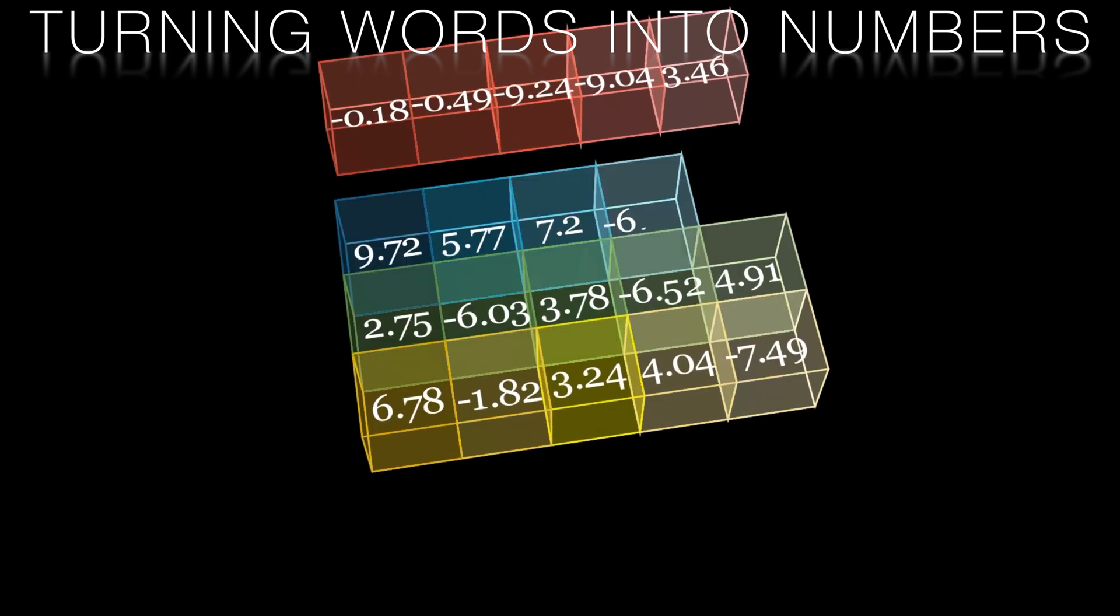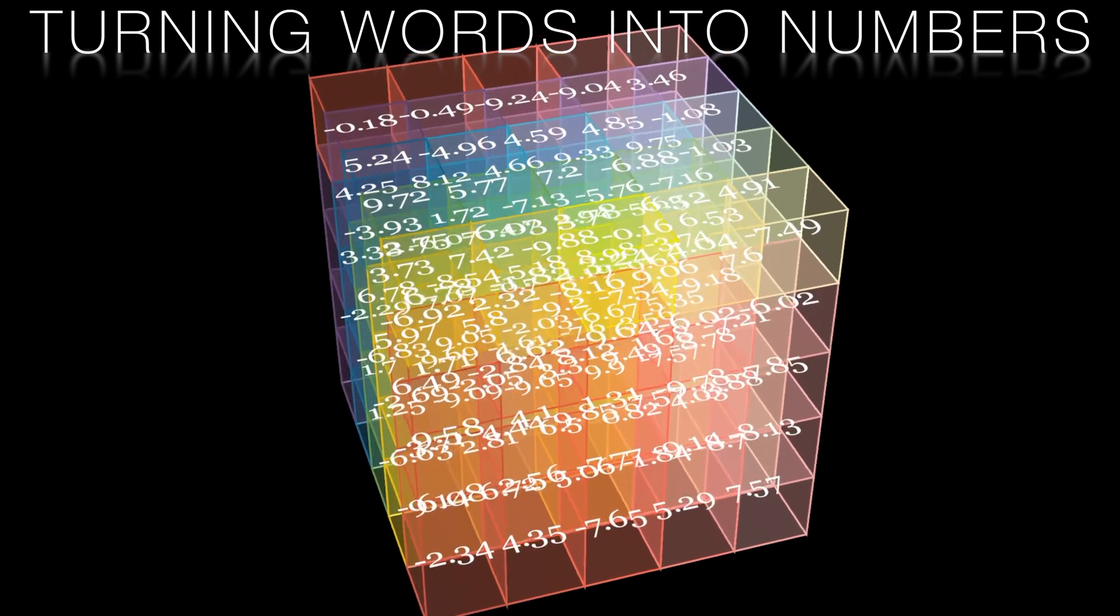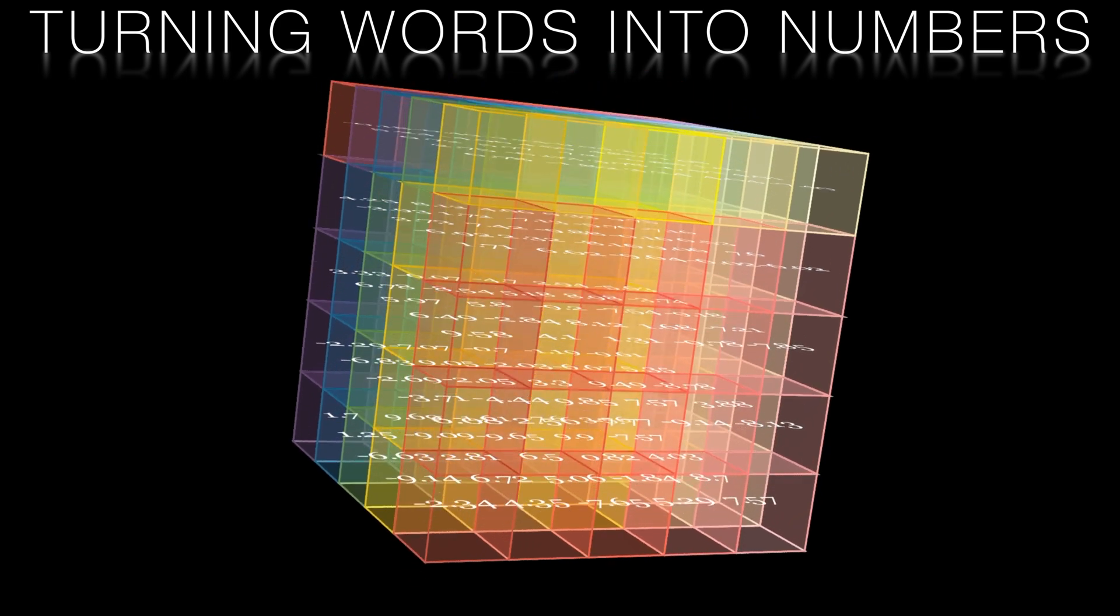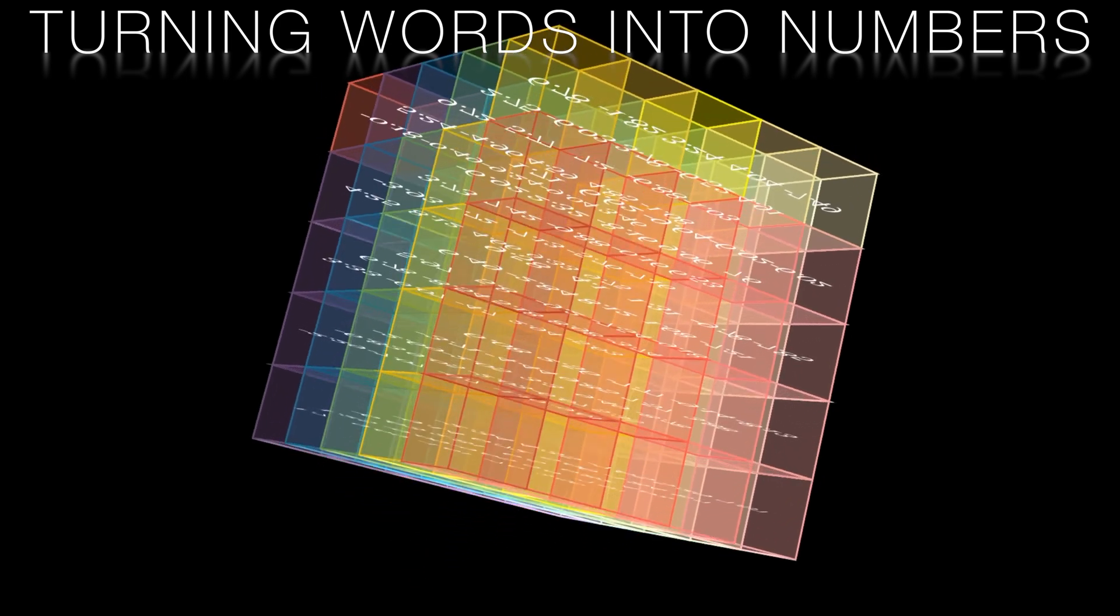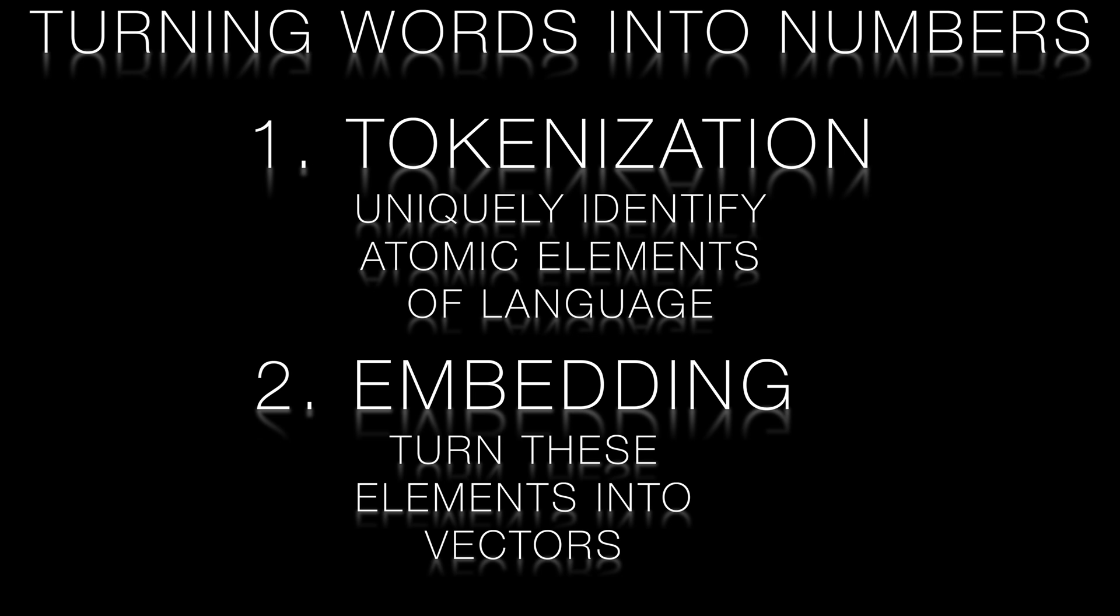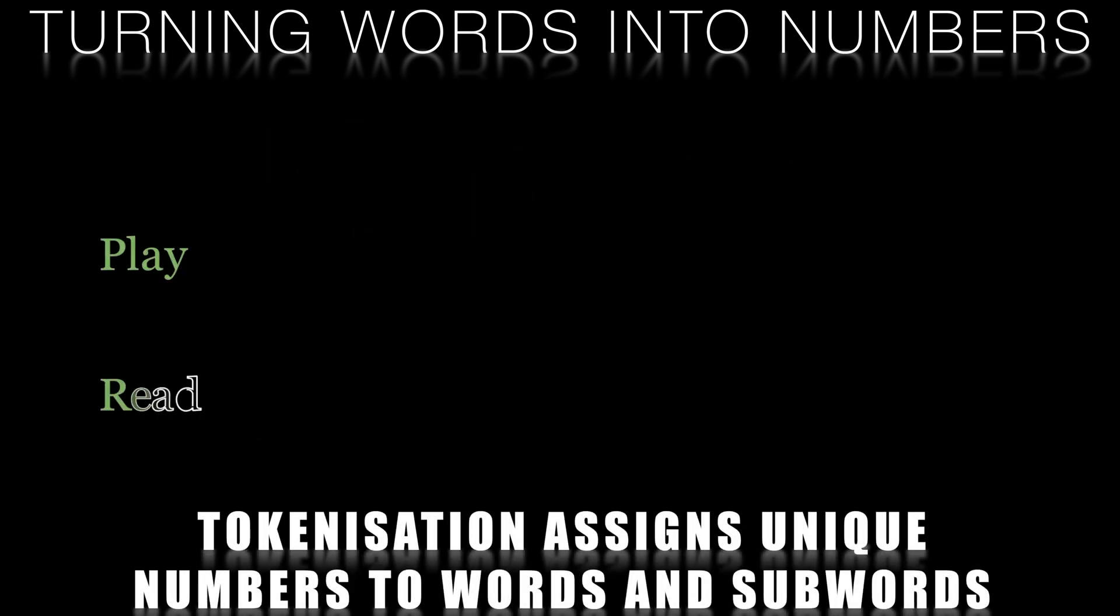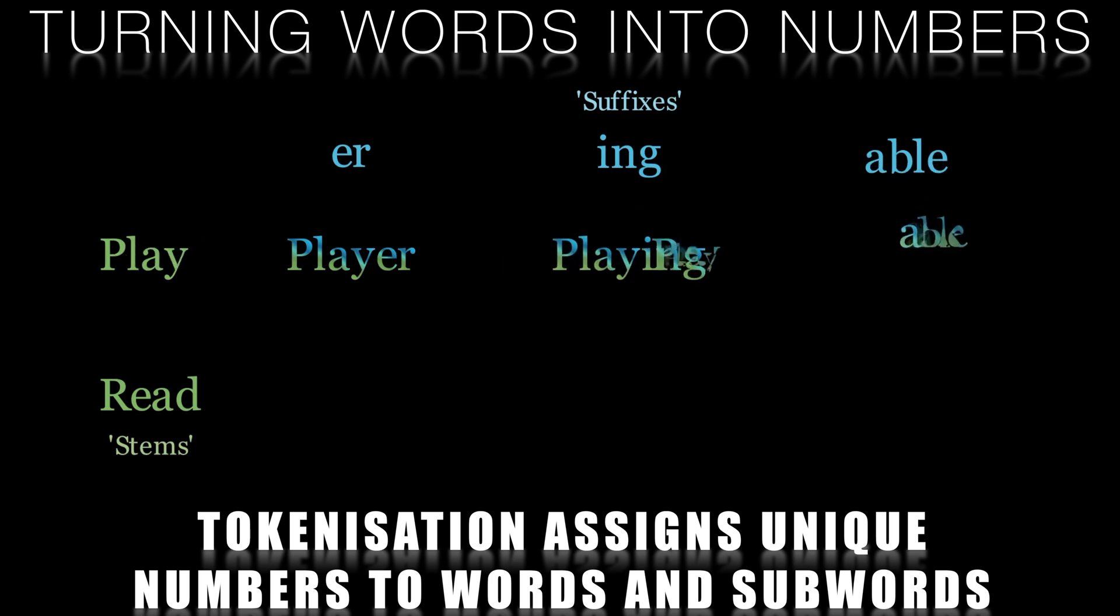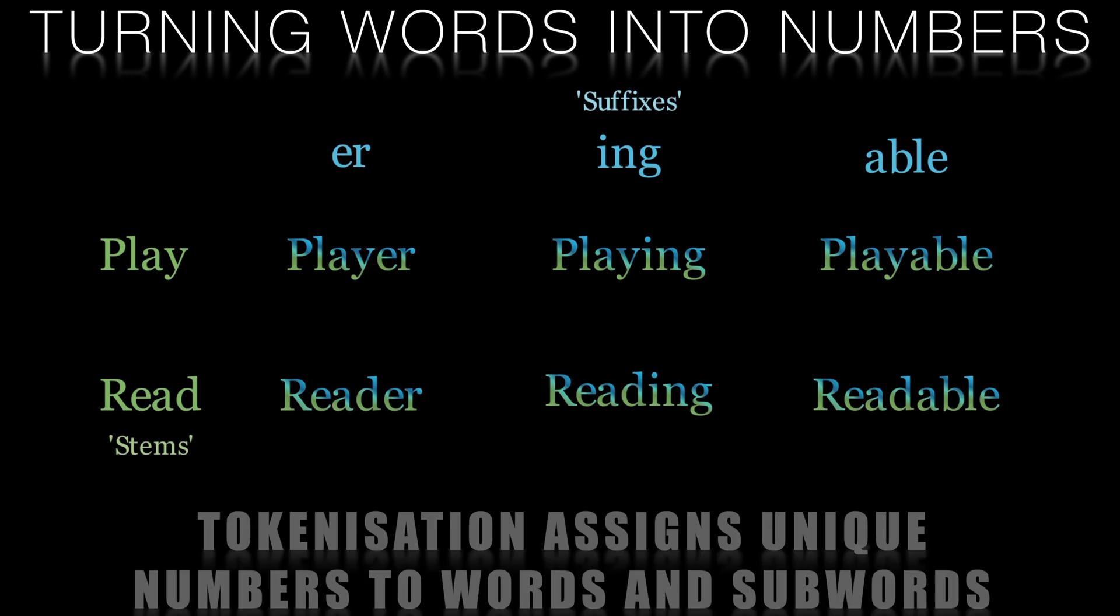Transformers, like all neural network models, work with numerical data: scalars, vectors, matrices, and tensors. Before processing any text, the words in the text sequence must be converted into a numerical representation. This conversion is typically done using techniques called tokenization and embedding. Firstly, tokenization. The text is broken down into smaller units called tokens. These tokens can represent words, subwords, even individual characters. The tokenization process assigns each unique token a specific integer, called a token ID.